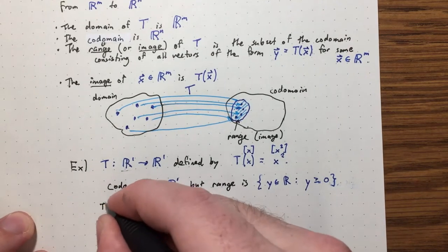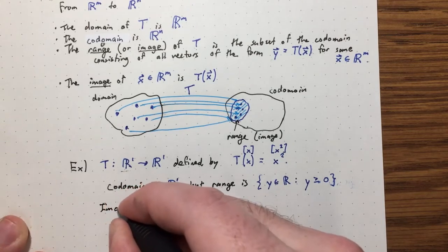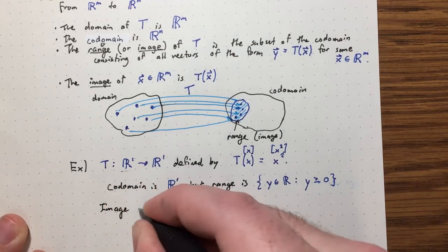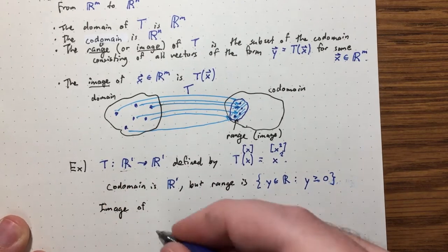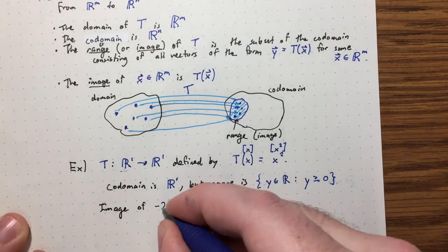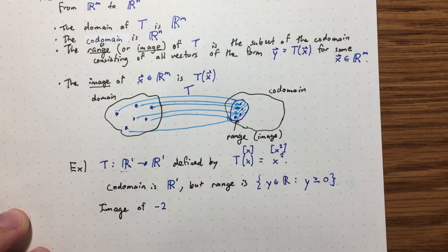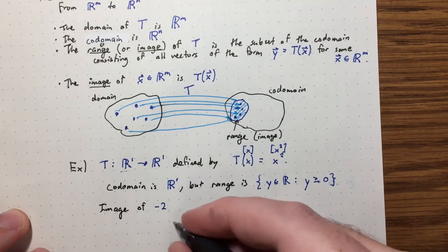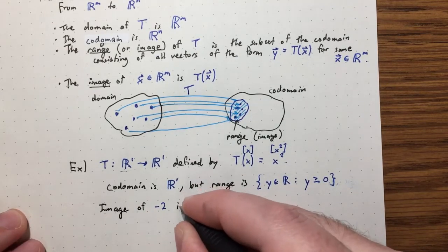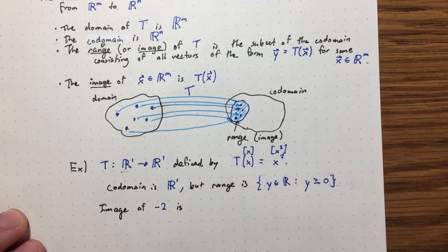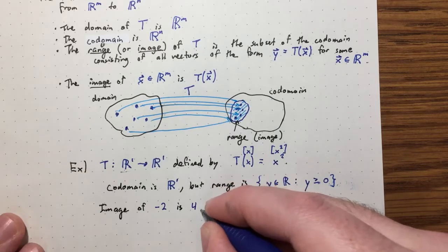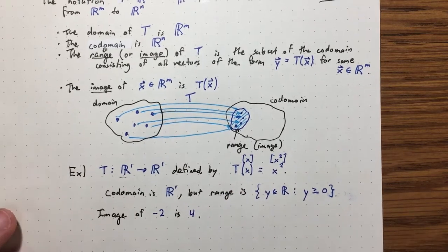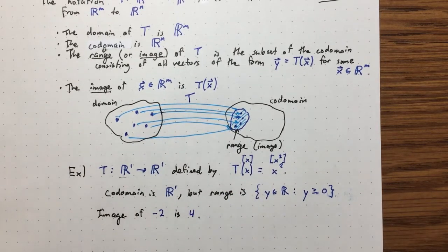Also, what's the image of negative two? It just means what does negative two map to. The image of negative two is four.